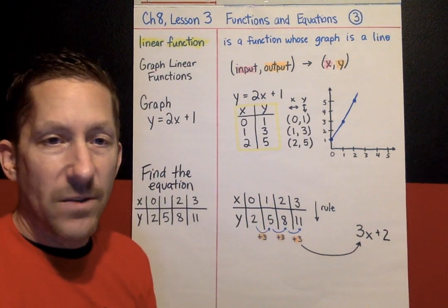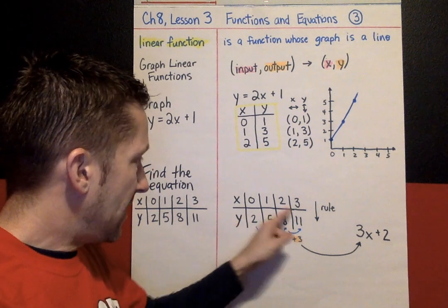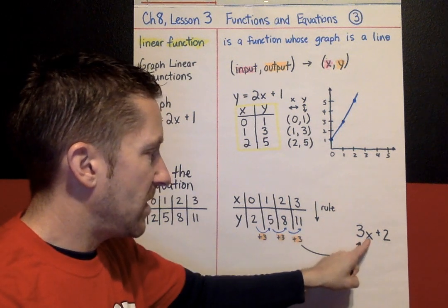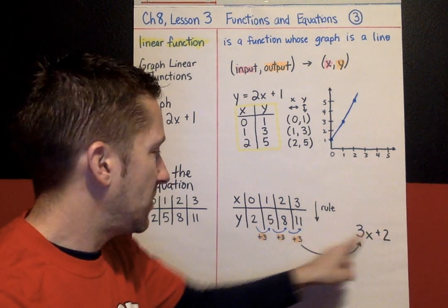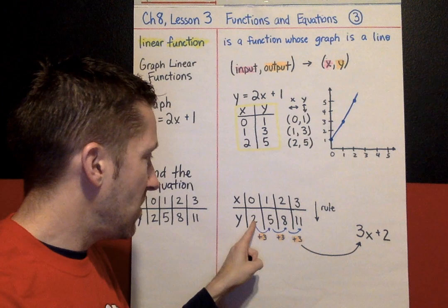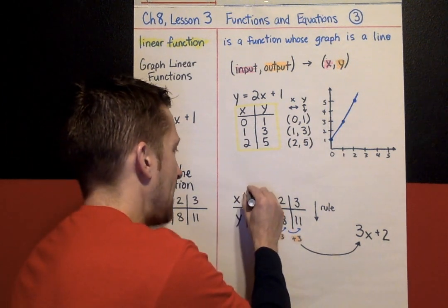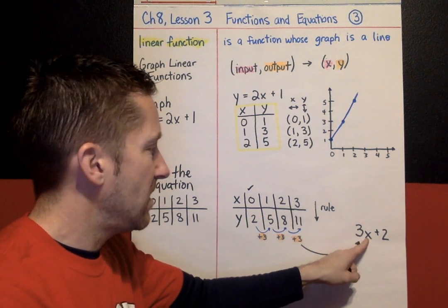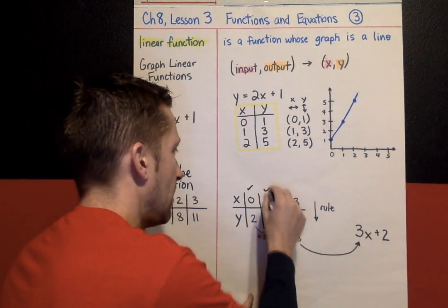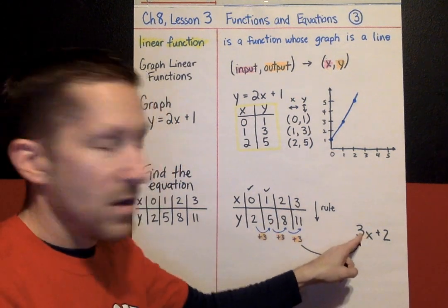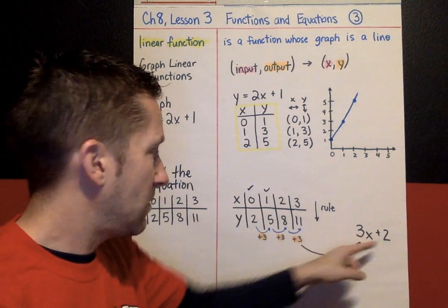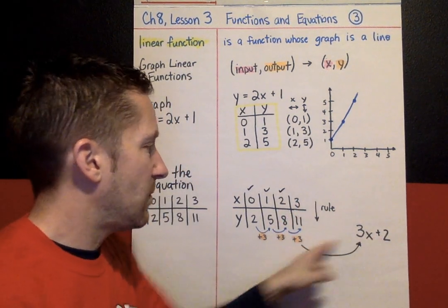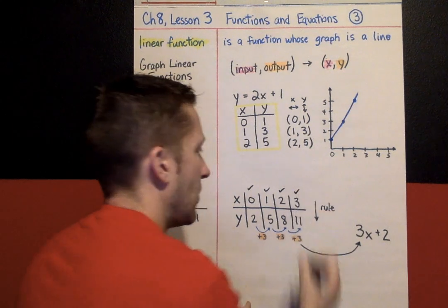Now, it has to always work. Test it on every single set of numbers. 0, put in a 0. 3 times 0 is 0. Plus 2 gives me 2. That worked. So, it has to always work. Put in a 1. 3 times 1 is 3. Plus 2 makes 5. Worked again. Put in a 2. 3 times 2 is 6. Plus 2 makes 8. Put in a 3. 3 times 3 is 9. Plus 2 is 11. It always works.